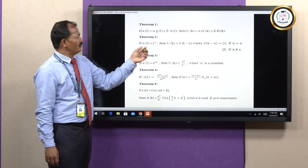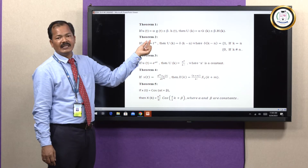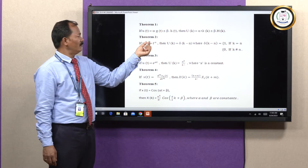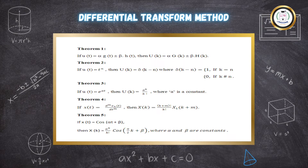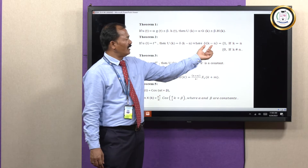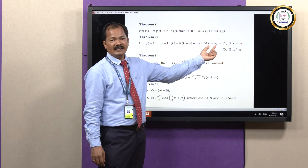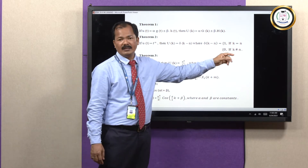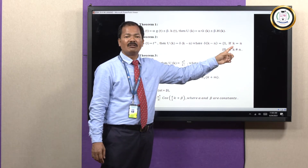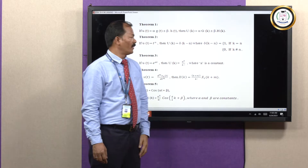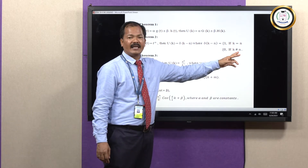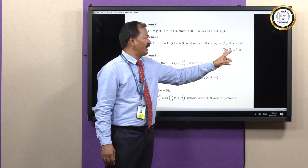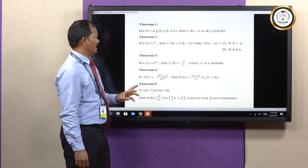Theorem 2 states: if small u of t equals t to the power n, where n is an integer, then U of k equals the Kronecker delta of k minus n. The Kronecker delta of k minus n takes two values: 1 if n equals k, and 0 if k is not equal to n.